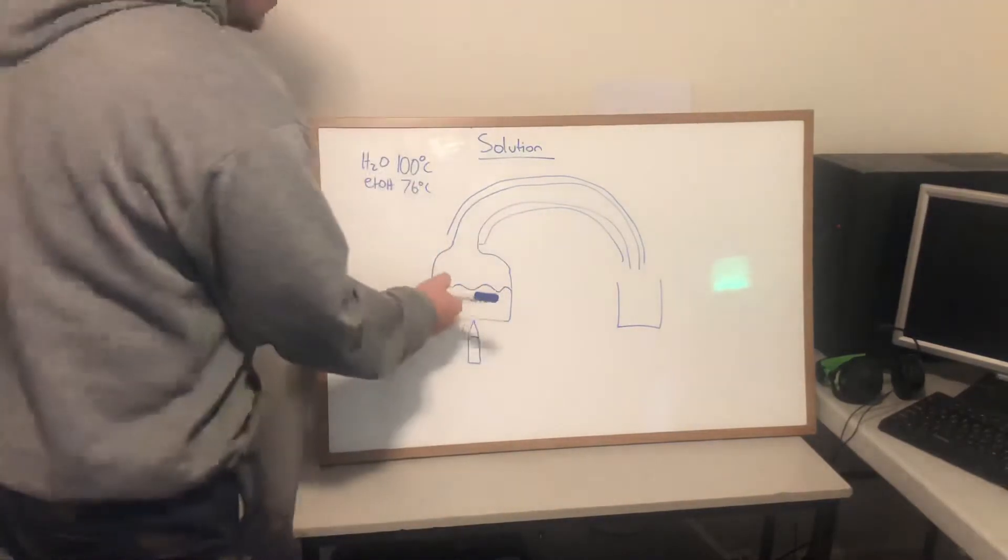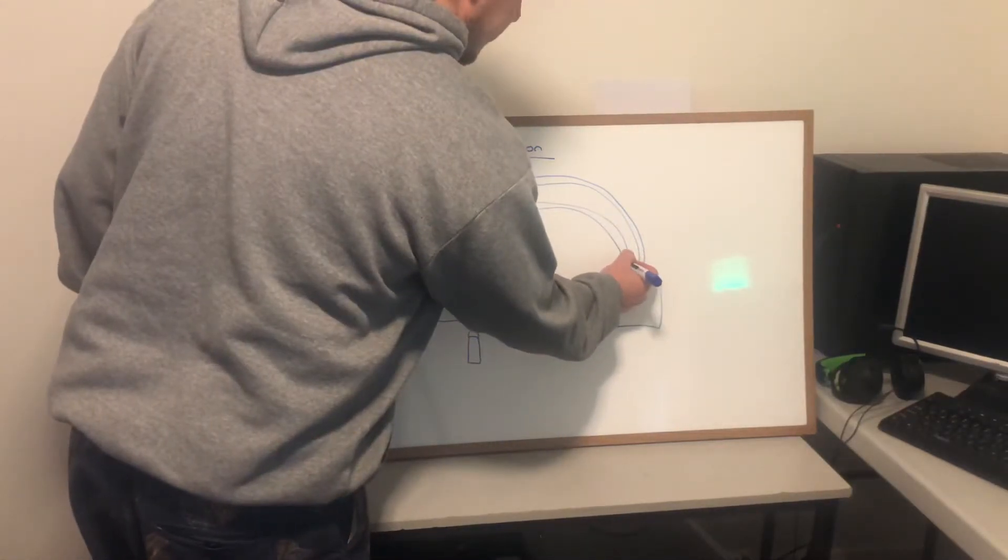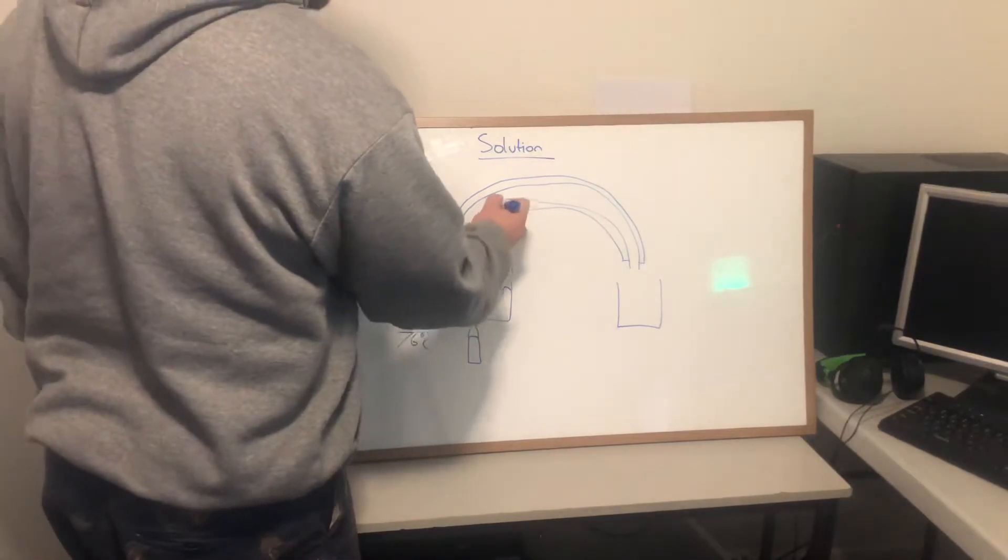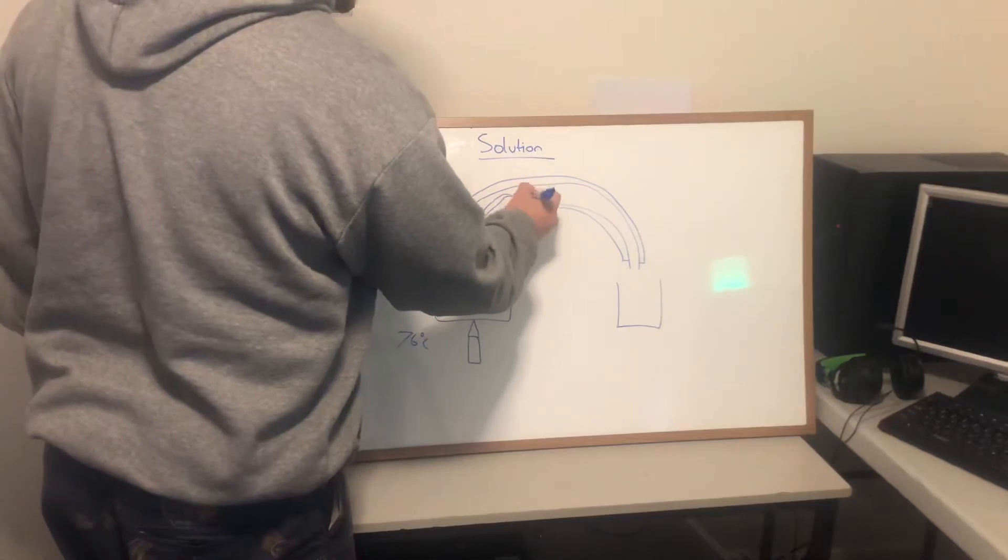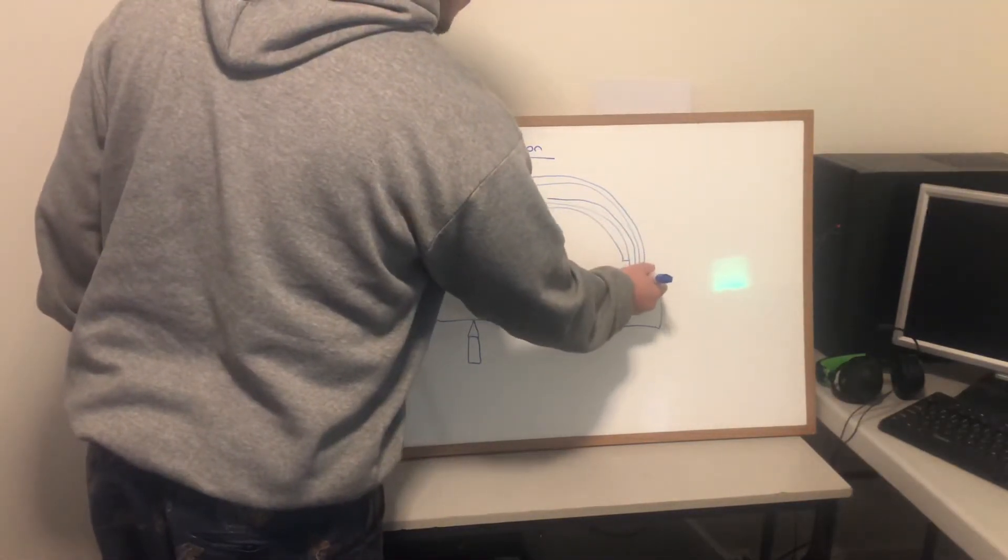And when we reach 75 degrees Celsius, or 76, sorry 75, the ethanol starts to boil and it goes up here. Once the vapors are cooled, they become liquid, and they drop to here.